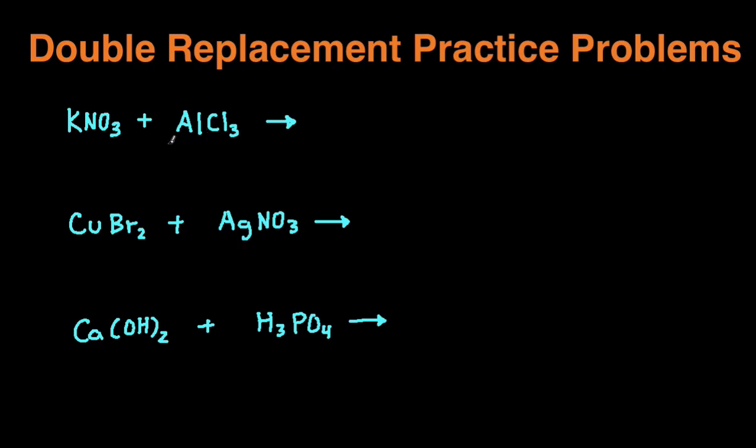Whenever you have two ionic compounds reacting with each other, the cations or the anions are going to switch places. Cations are positively charged and anions are negatively charged. So essentially, you can think of it as either the two positive charge ions switch places or the two negative ions switch places. It'll make more sense as we go through these three practice problems together.